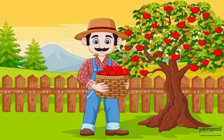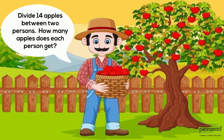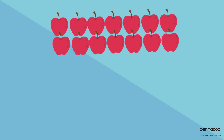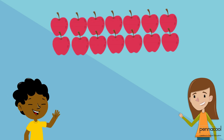Let's look at a simple question to help us figure out what division is. Let's divide 14 apples between two persons. How many apples would each person get? Well, here we have our 14 apples and we have our two people.